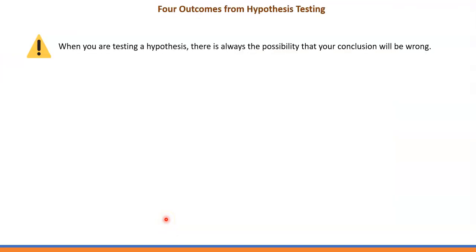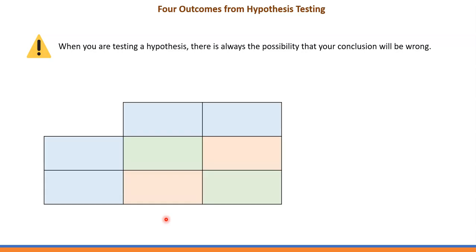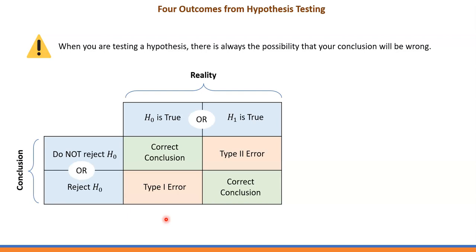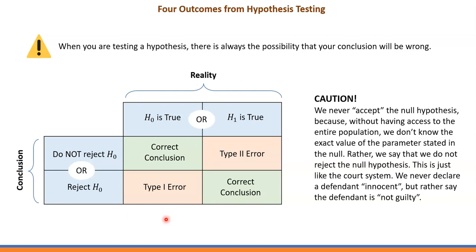We have to keep in mind that when testing a hypothesis, there's always the possibility the conclusion will be wrong — that we make a Type 1 or Type 2 error. We never accept the null hypothesis or say it is true, because we don't have access to the entire population and will never know the true population proportion, mean, or standard deviation.